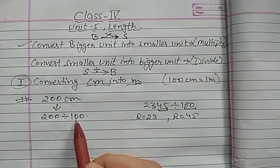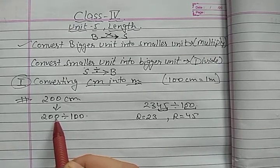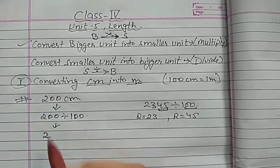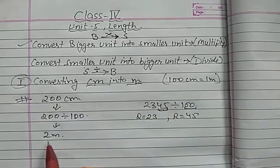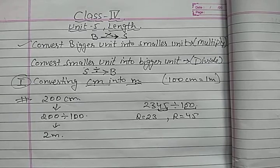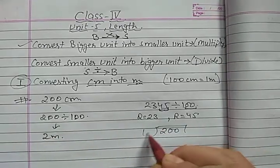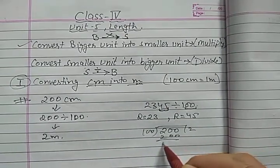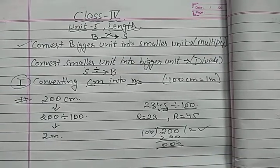So in the same way, how many zeros are there in 100? Two. So last two digits हम separate कर देंगे. What will be left? Two meters. And 00 cm — zero की कोई value नहीं है. So the answer is 2 meters. And if you want to divide it the long way: 200 divided by 100 — 100 times 2 is 200 — so the answer is 2. So 2 meters is the answer.